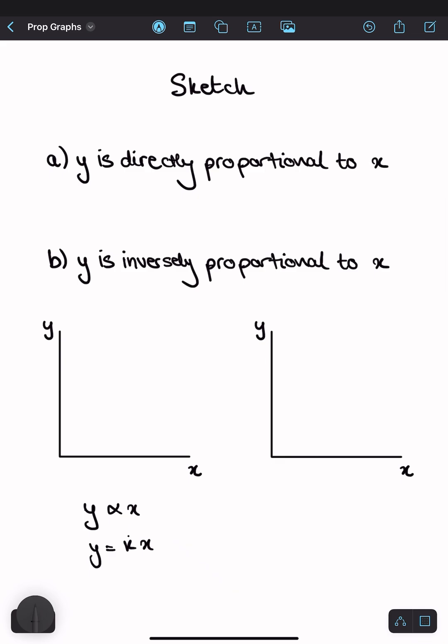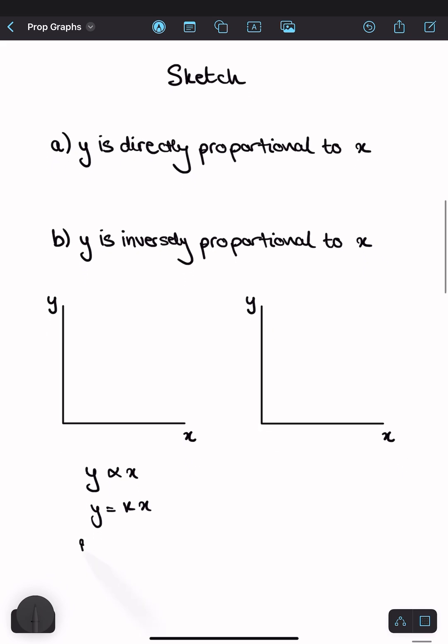So as x increases, y is also going to increase. And we need to know that if x is equal to 0, y is also going to be equal to 0. This means it goes to the origin. So the graph will start here and increase linearly. And that's it.